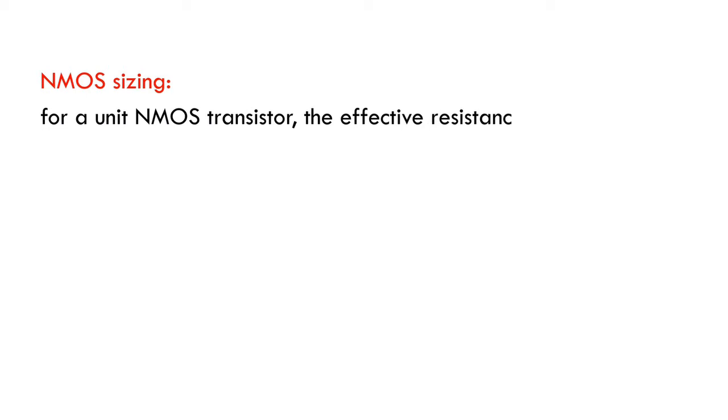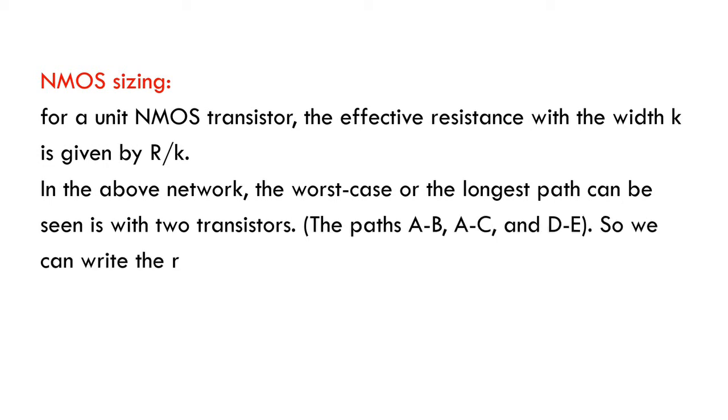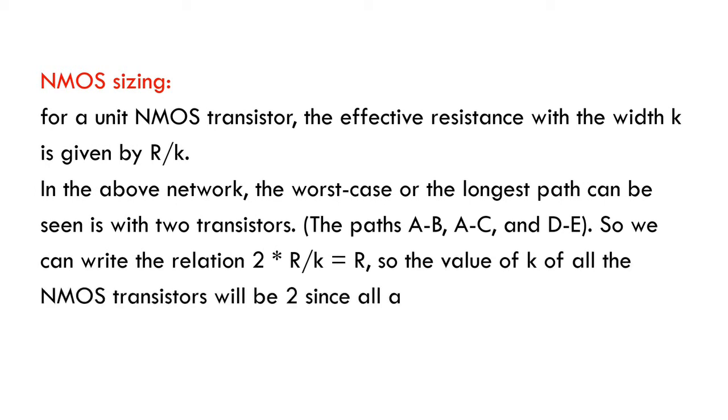For a unit NMOS transistor, the effective resistance with width K is given by R/K. In the above network, the worst case or the longest path can be seen with two transistors. The paths A-B, A-C, and D-E. So we can write the relation 2 times R/K equals R, so the value of K of all the NMOS transistors will be 2, since all are in the longest path.